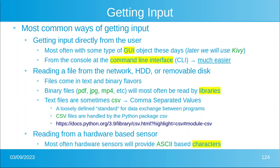You can read a file from the network, a hard disk drive, a USB disk, or something like that. Or you can read from some hardware-based sensor — most of those are going to give you ASCII characters. Files come in a lot of flavors, but essentially there are two major types: binary and text.